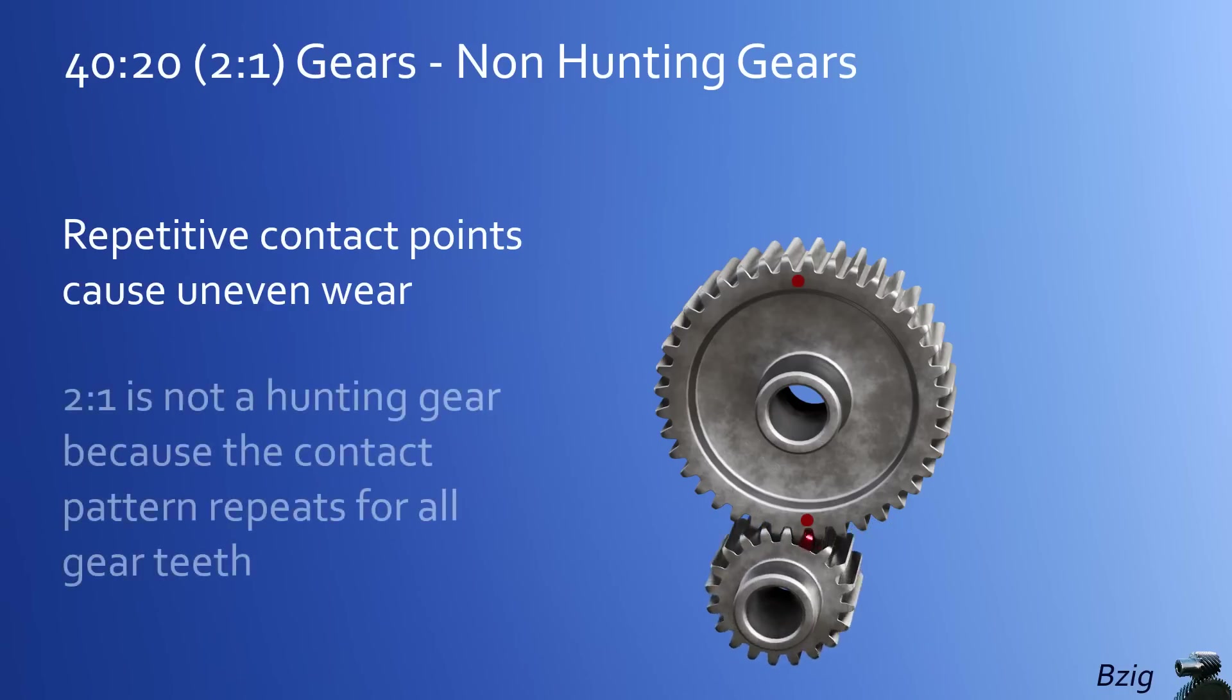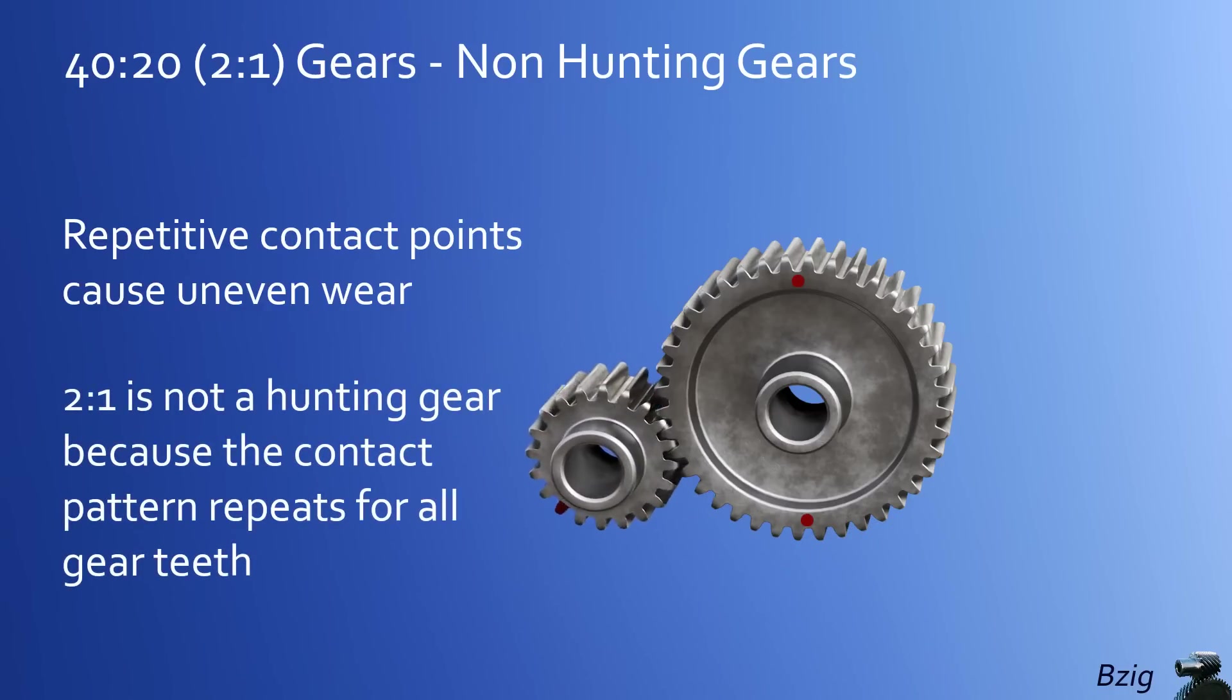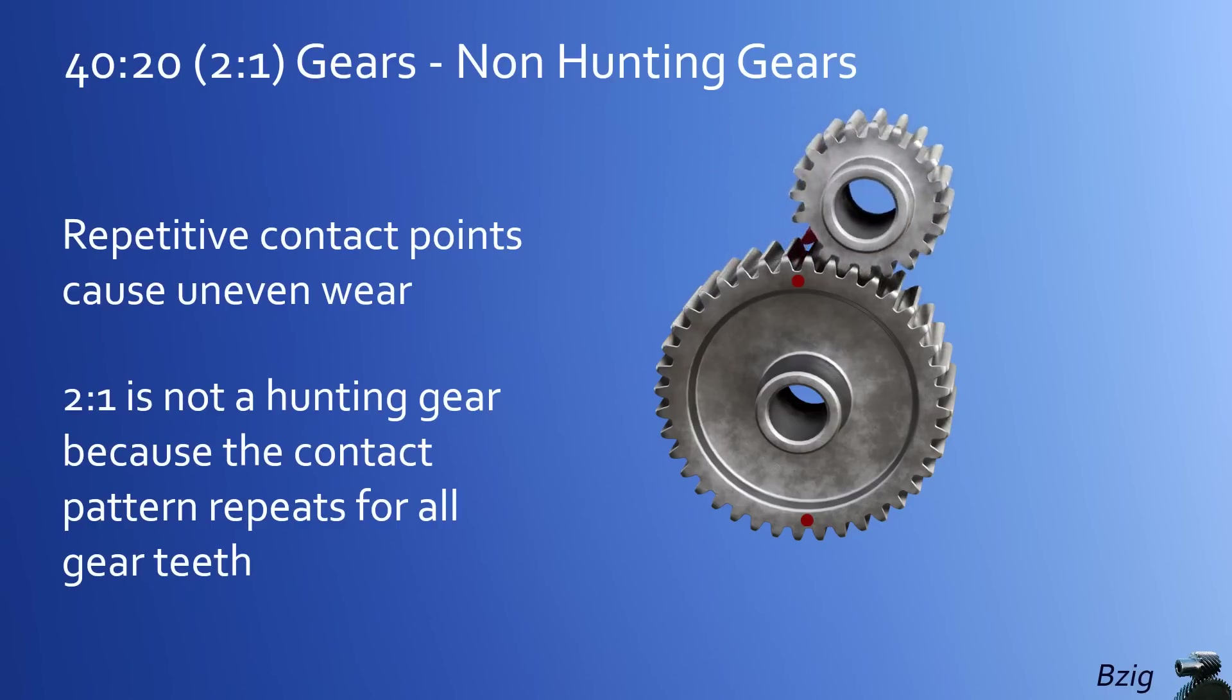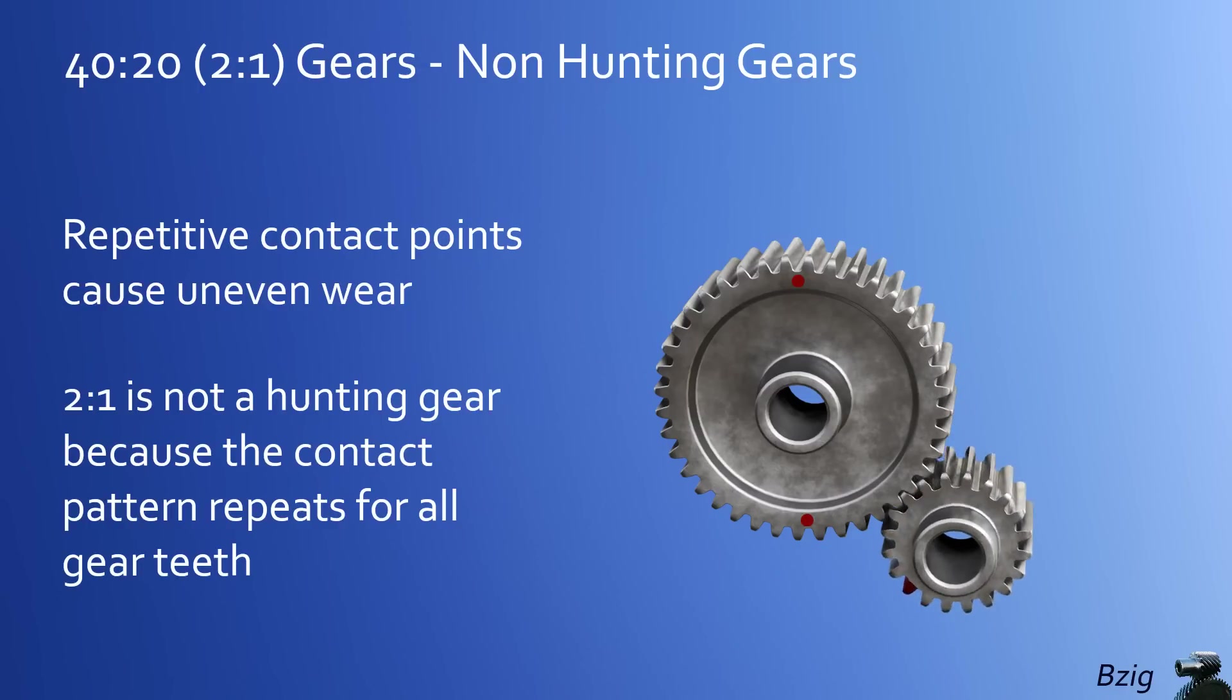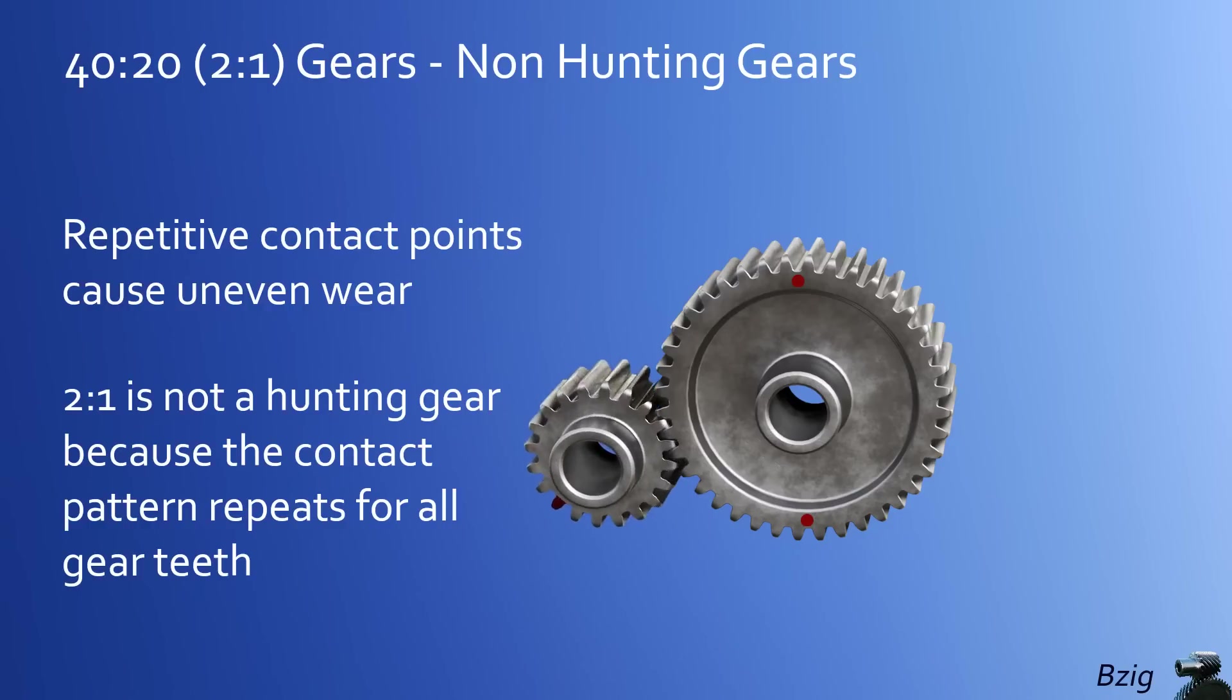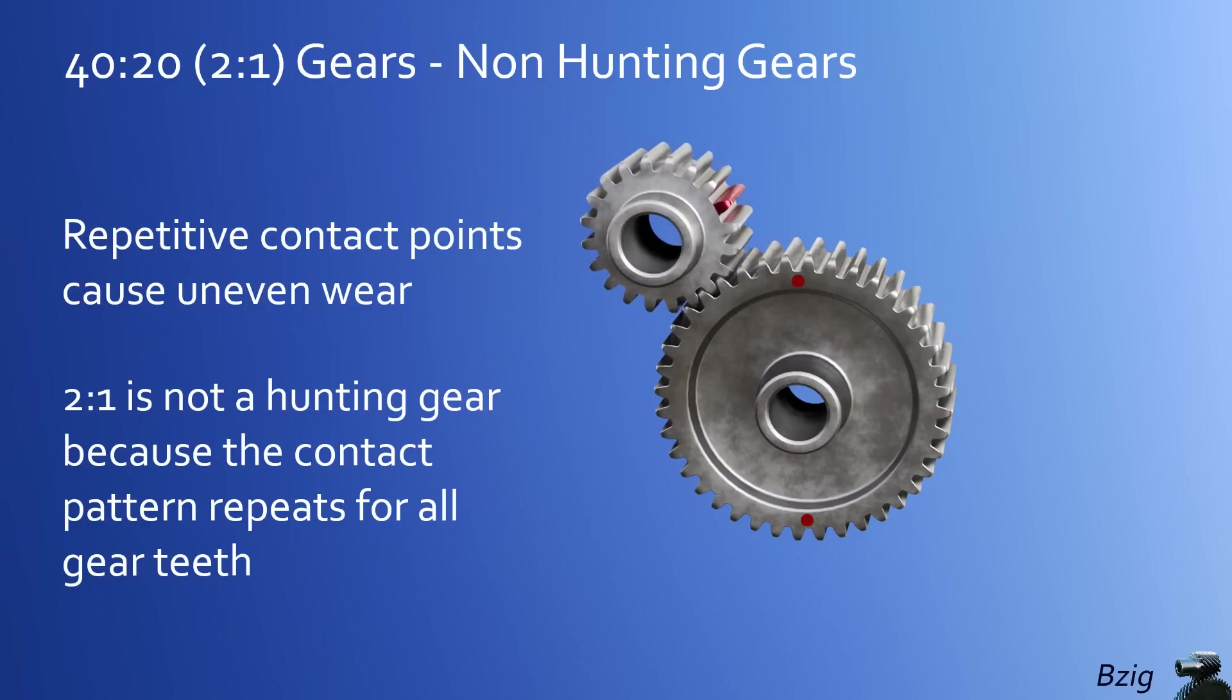And this relationship will never change. The problem this creates is that all of these individual gear teeth have slight differences in microgeometry. These repetitive and unchanging contact points will create a non-uniform wear pattern over the two gears. A better solution is to use a gear pair that results in a hunting tooth.